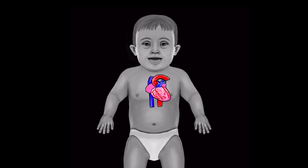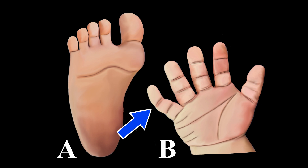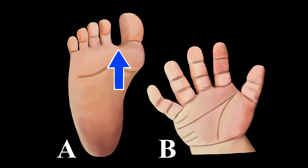Children commonly have a bent fifth finger called clinodactyly. Additionally, a single crease on their palms is common, and a wide space or gap between the large toe and the second toe is common.